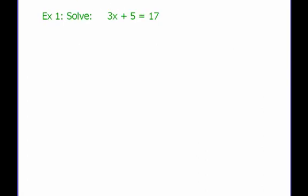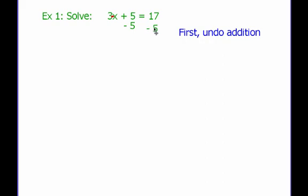Here's example number one. Solve: 3x plus 5 equals 17. Let's look at our operations — we have this plus 5, and then we have 3 times x. So we've got to get rid of this 5, we've got to get rid of this 3, and we just want to have x all by itself. My first step is to undo this addition by subtracting 5 on both sides. The positive 5 and the minus 5 cancel each other out, and on the other side, 17 minus 5 gives me 12. So I end up with 3x equals 12.